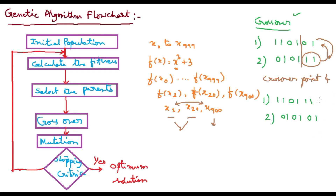Now, what we need to do is see the fitness function for these new children. If any of these two are the best, then we can stop here if you don't want to proceed. Otherwise, if you want to proceed and get maybe some better results, you can go ahead. This is about crossover simply.